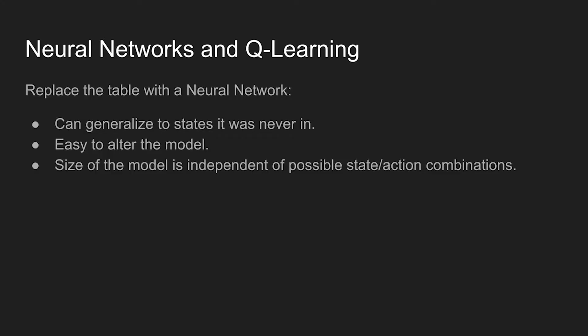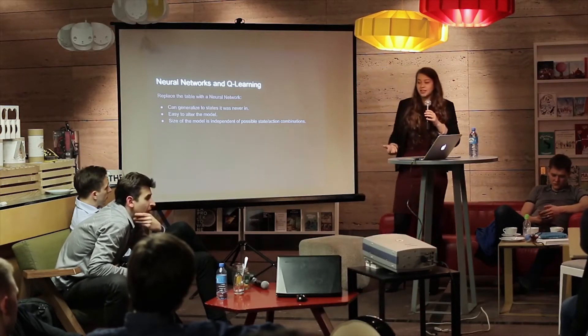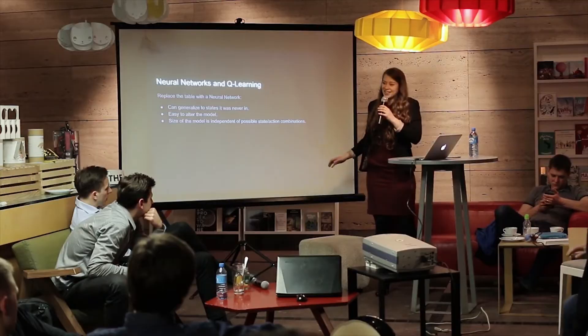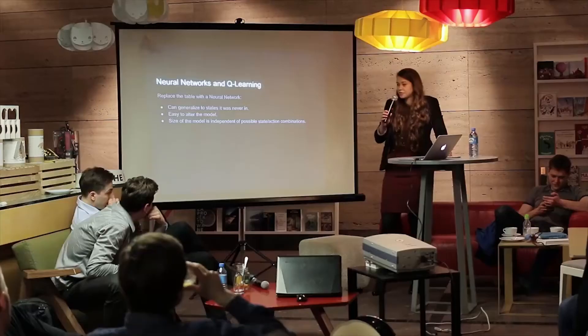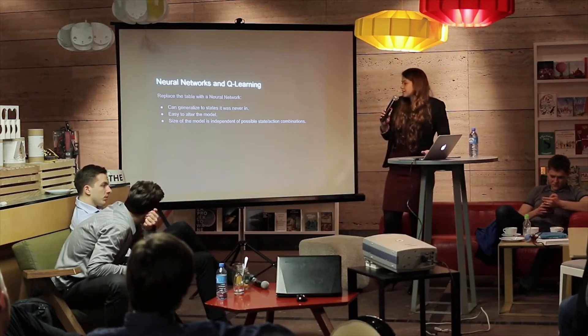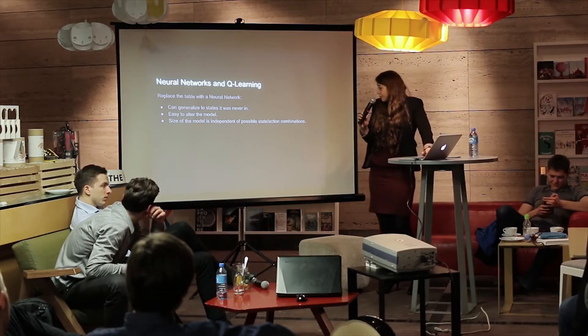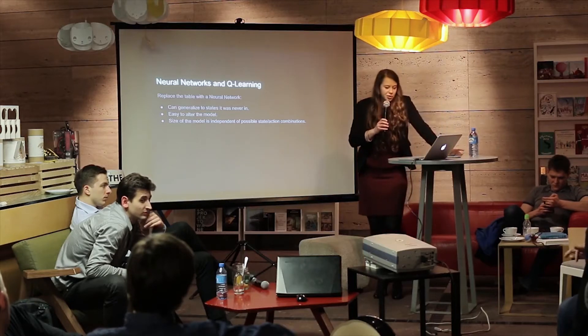So — neural networks. They're a great hit nowadays and great at function approximation. So why not use them to approximate this Q function we want to find? There's no reason not to try. And it's even better because it can generalize to states the actor was never in, which is not possible with the standard table approach. Models are easy to alter — you can't alter a table, it has to stay the same. Here you can change layers, add more layers, different layers. And the actual complexity of the problem doesn't define how big the model has to be. The problem might be very complicated and you put in just two layers and be happy about it.